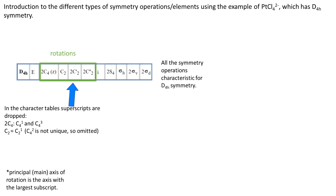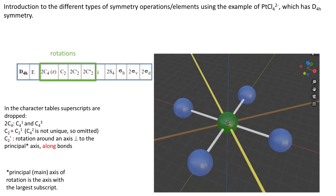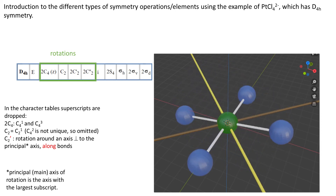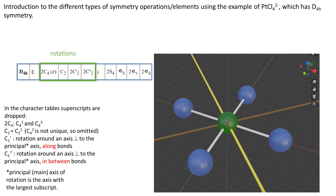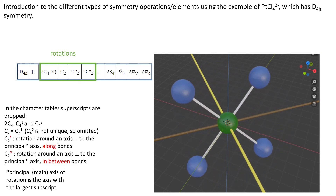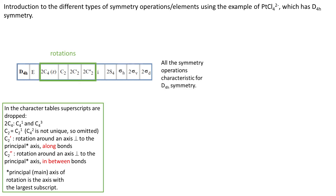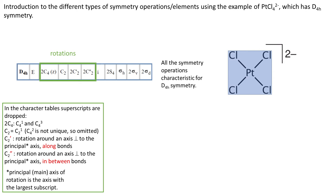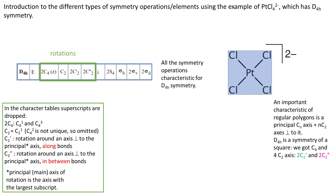Here we have two C2 rotations with prime and double-prime signs. These signs indicate rotations perpendicular to the principal axis. C2' indicates rotations around an axis perpendicular to the principal axis along the bonds — there are two of them. C2'' indicates rotations around an axis perpendicular to the principal axis in between the bonds — again there are two. It is characteristic of regular polygons that the principal Cn axis is accompanied by N C2 axes perpendicular to it. For tetrachloroplatinate 2 with principal C4 axis, we have four perpendicular C2 axes: two along the bonds and two in between.